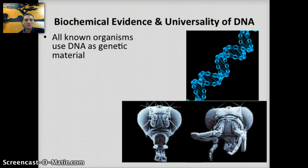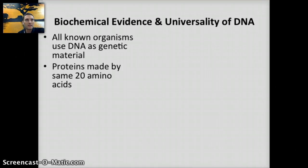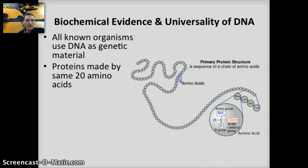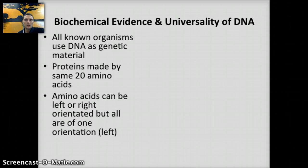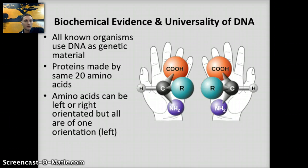For example, the gene sequence responsible for producing legs was put into a fruit fly in a specific location, thus producing legs on the head of the fruit fly. Proteins are made by the same 20 different amino acids, and the order and number of those amino acids is what makes each protein unique. Interestingly, amino acids can be left or right oriented, but all amino acids on Earth are of the left orientation.